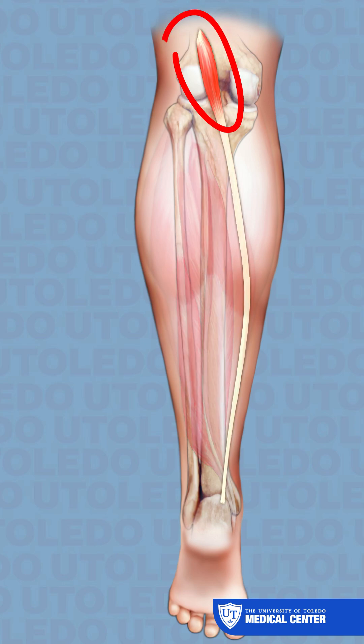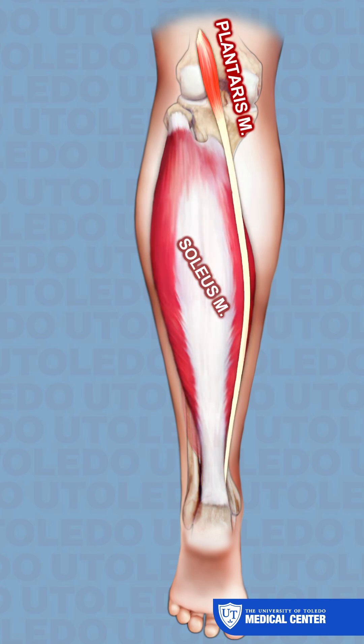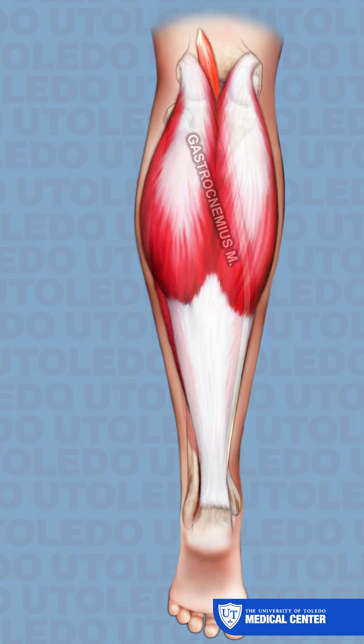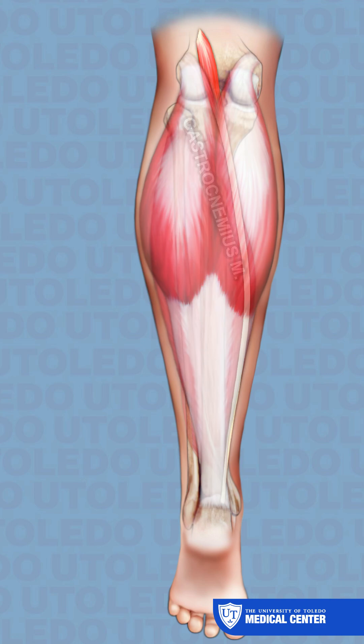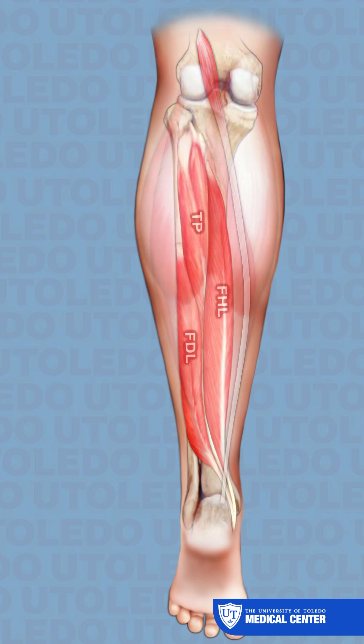The smaller plantaris muscle lies between the soleus muscle and the gastrocnemius, while the other muscles are located deeper within the leg.